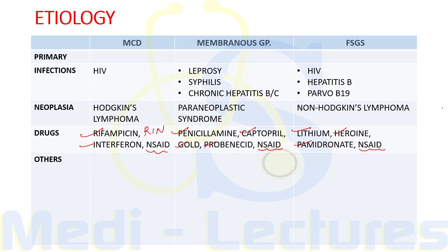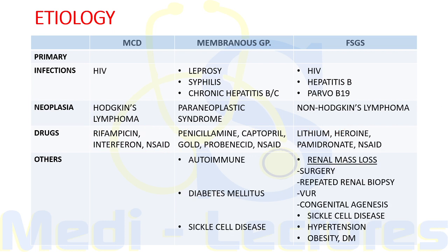In membranous glomerulopathy, associated drugs are penicillamine, captopril, gold, and probenecid. Among FSGS, other drugs include lithium, heroin, and pamidronate along with NSAIDs. For other disorders, membranous glomerulopathy can be caused by autoimmune conditions such as rheumatoid arthritis, Graves disease, or pernicious anemia, due to increased production of IgG.